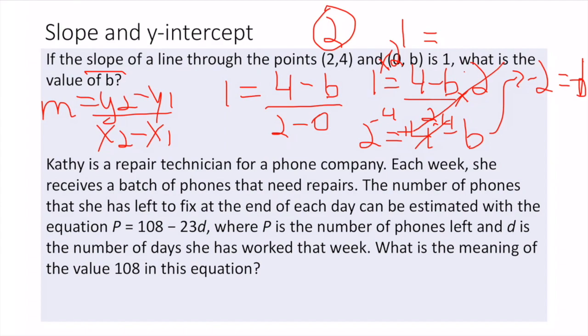So -2 equals -b. The negatives cancel on both sides, so b equals 2.